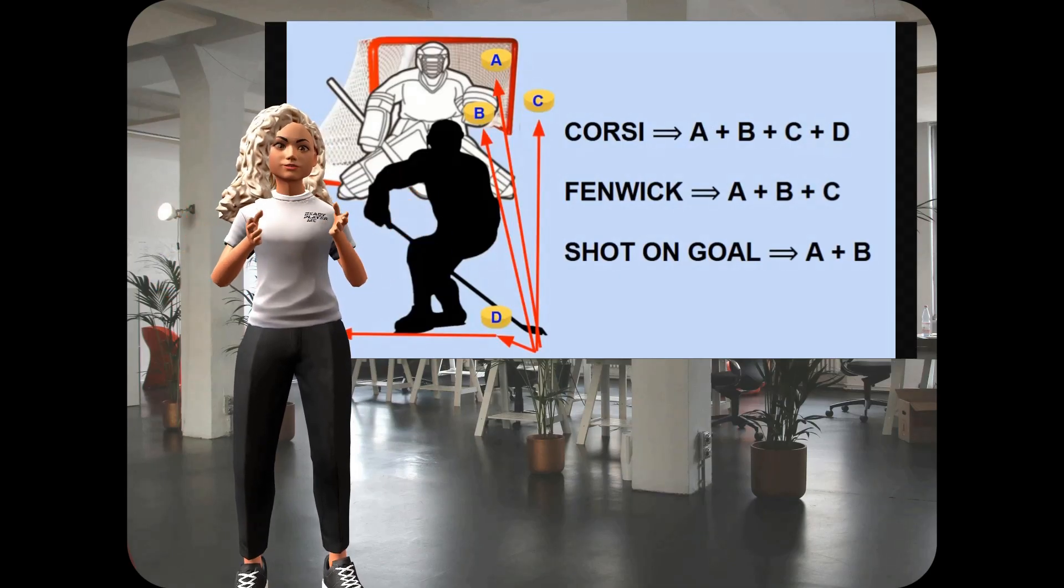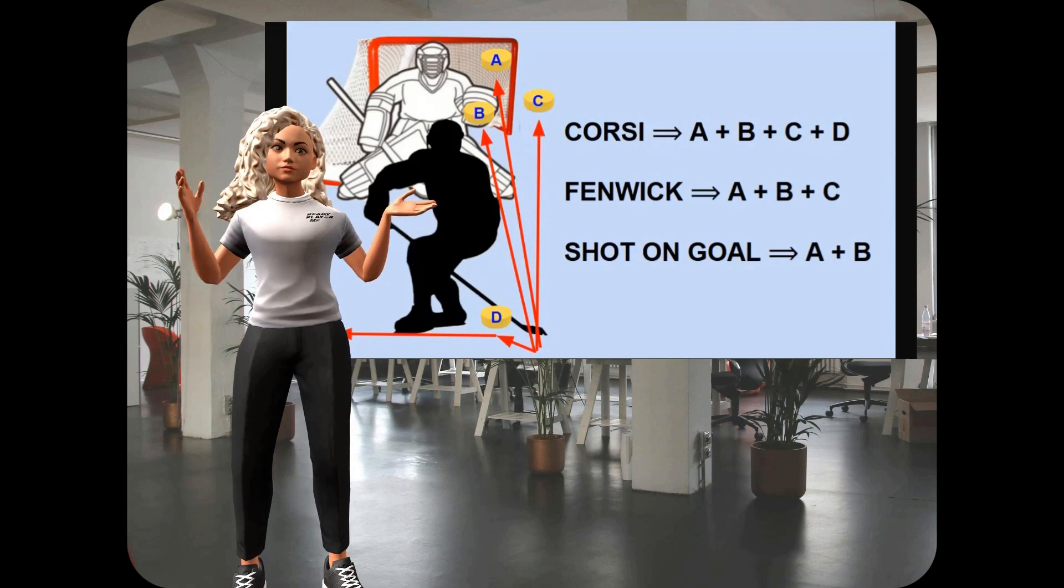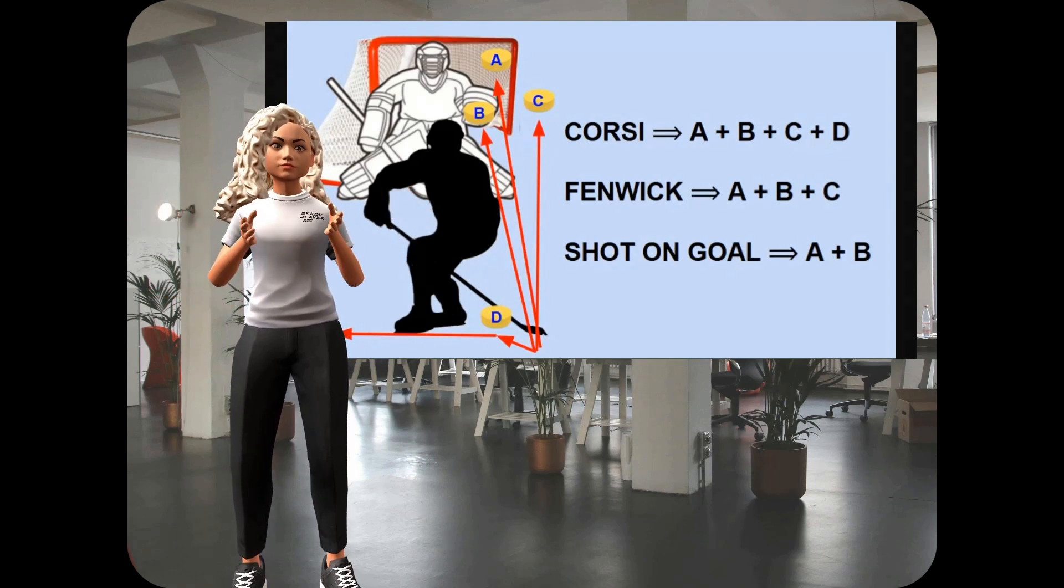And then finally, a shot on goal is A and B, goals and saves, because if the goalie had not been there, it would have gone into the goal. And so, those consist of a shot on goal.